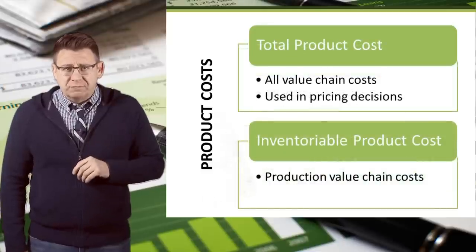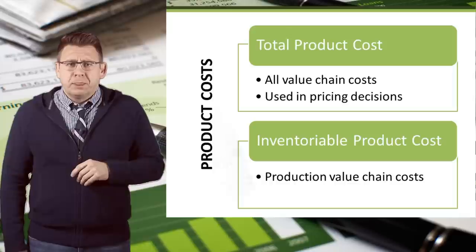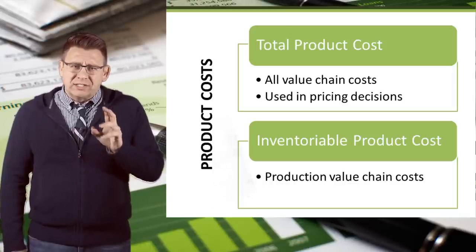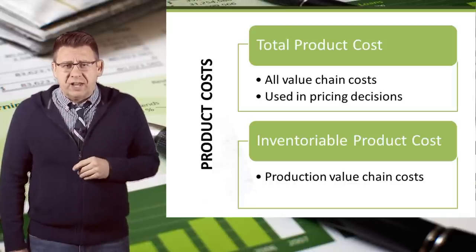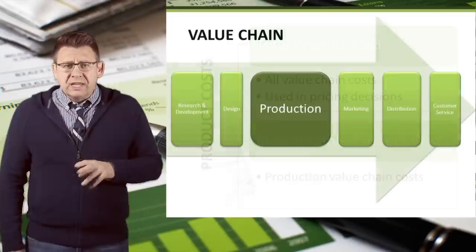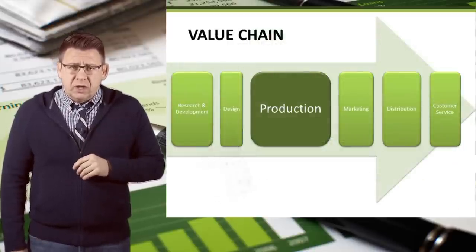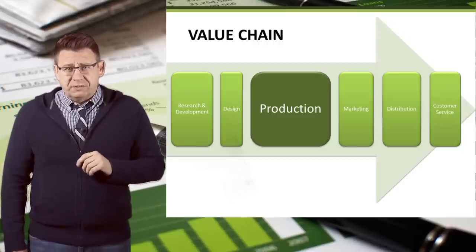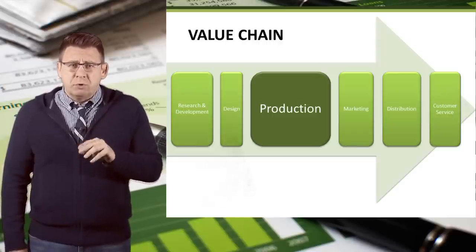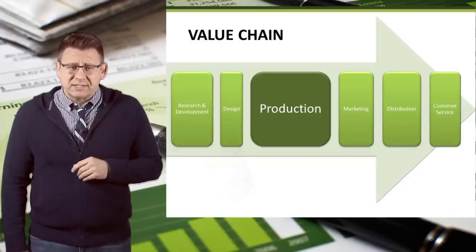Inventoryable product costs, which are sometimes just called product costs, are only the costs incurred during the production stage of the value chain. Since inventoryable product costs include only costs incurred during production, all costs incurred in other stages of the value chain must be reported in the period in which they are incurred as expenses.